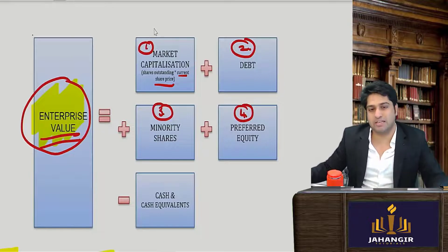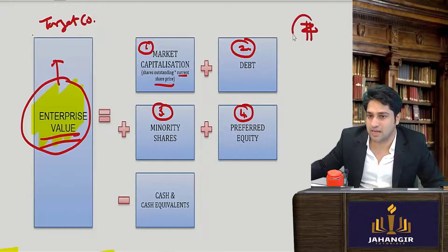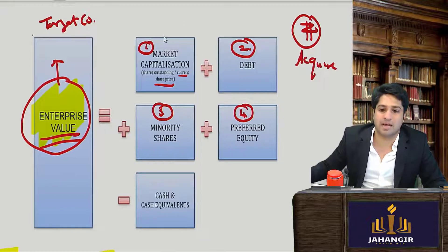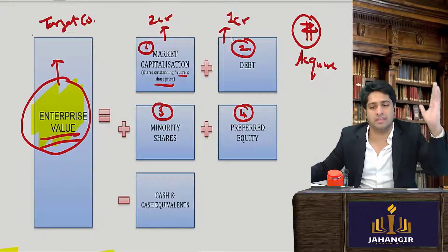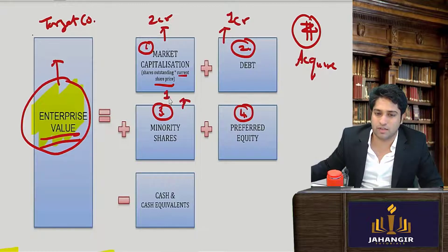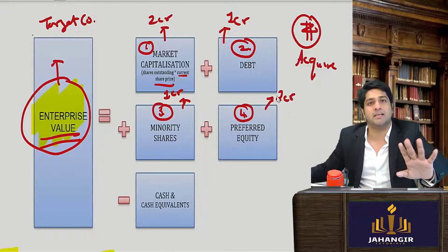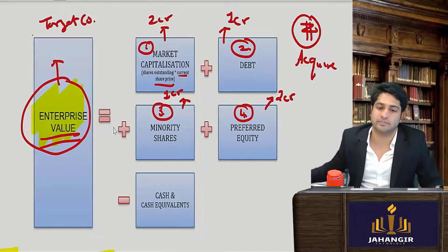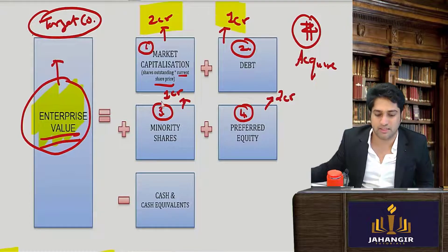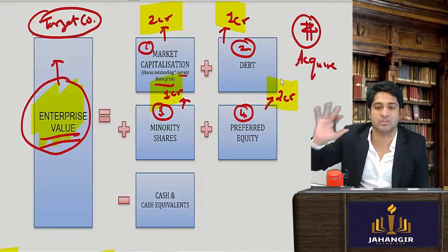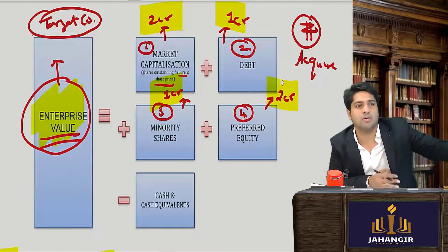Let me give you an example. I want to acquire this target company and I am the acquirer. I find out the market price of the equity shareholders is two crores. Debt is one crore. So how much will I have to pay to buy this target company? I have to pay — totalling six crores to buy this company. This is the entire enterprise value — I need six crores to buy out this entire company.